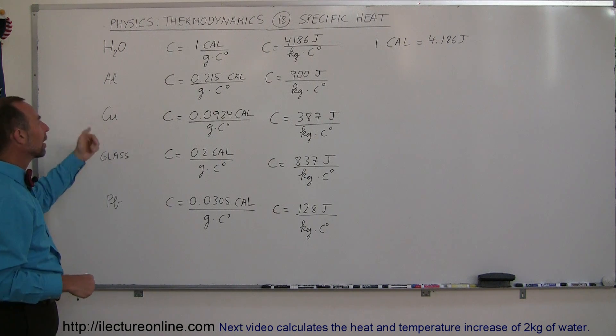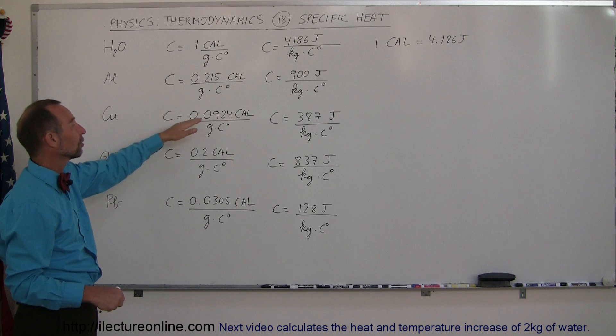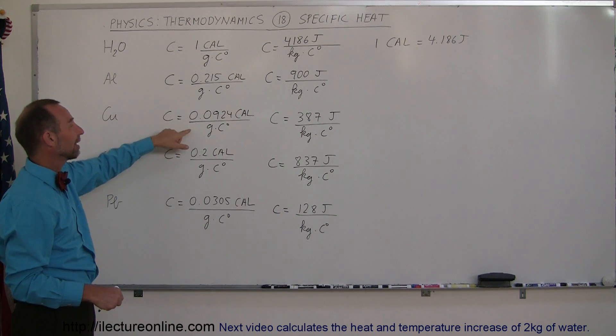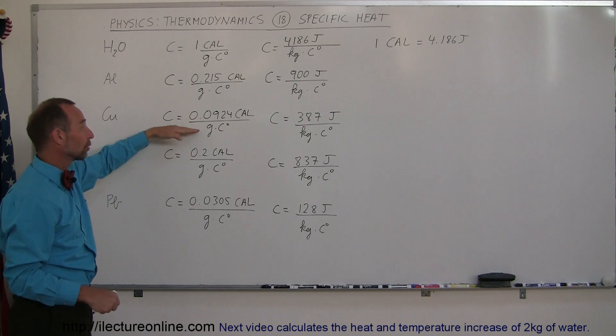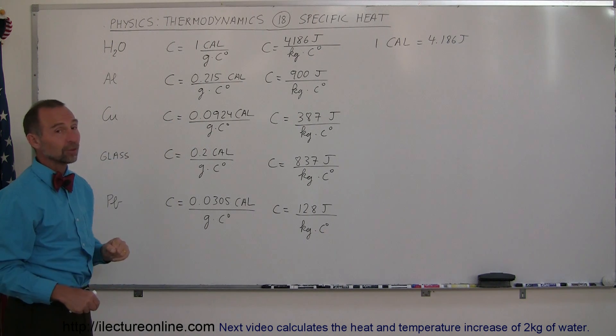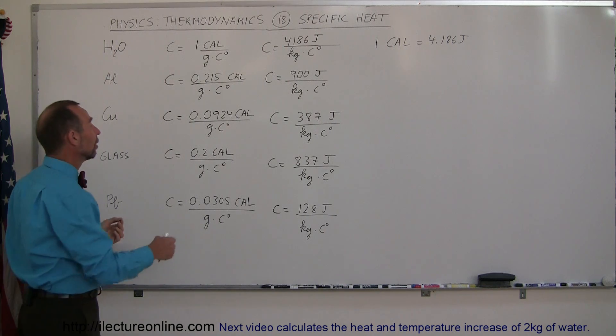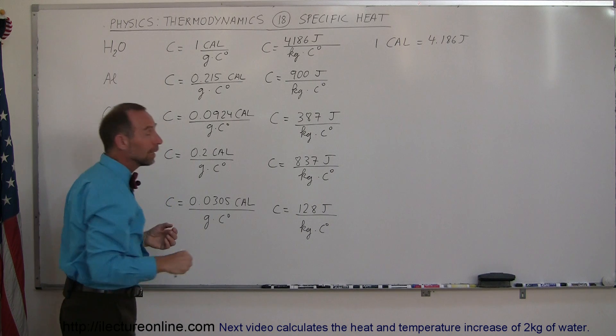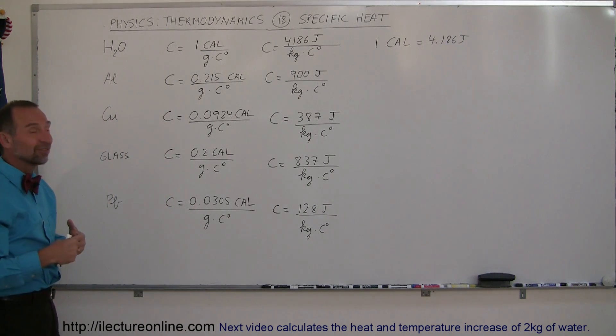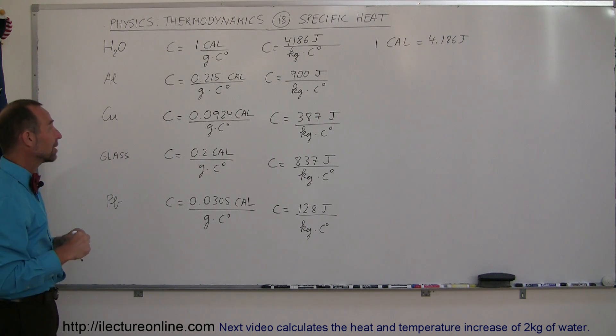Copper has an even smaller specific heat: 0.0924 calories per gram per Celsius degree, less than one-tenth of that of water. In other words, if you add the same amount of heat to copper as to water, the copper's temperature would increase ten times as much, as long as the amounts in grams are the same.